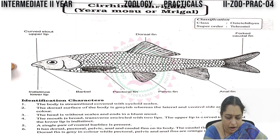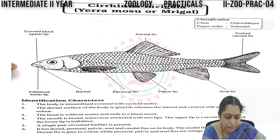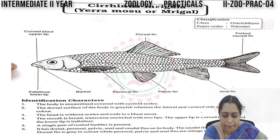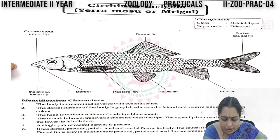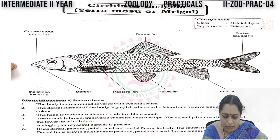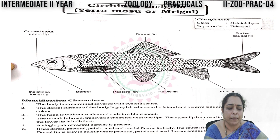A single pair of dorsal barbels is present. It has dorsal, pectoral, pelvic, anal, and caudal fins on its body. The caudal fin is deeply forked; the dorsal fin is gray in color, while the pectoral, pelvic, and anal fins are orange colored.